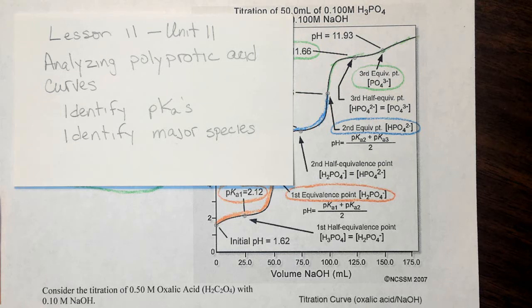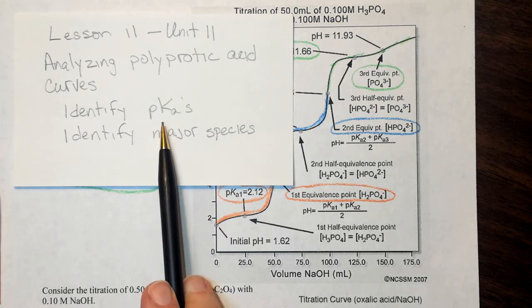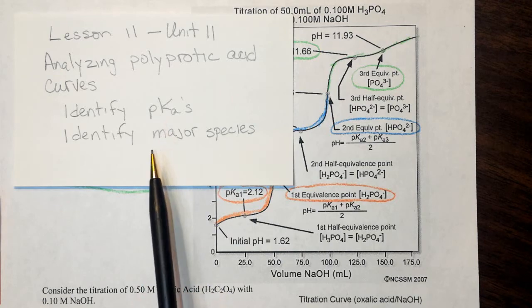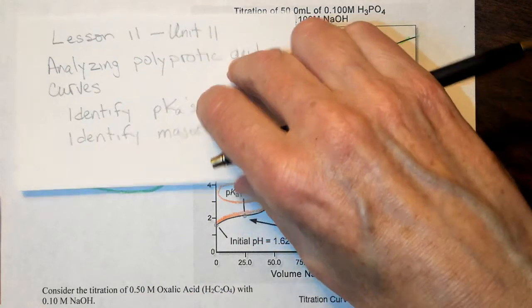This is Lesson 11 from Unit 11. We're going to be looking at analyzing polyprotic acid titration curves. We have two goals here. One is to look at the curves and identify the pKa's for the various steps of deprotonation, and the second is to identify major species along each point in the curve.